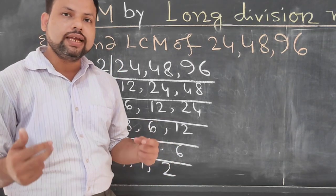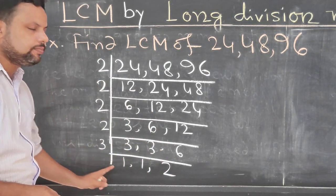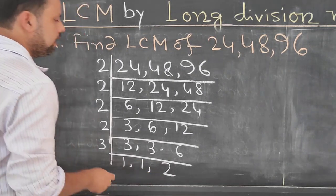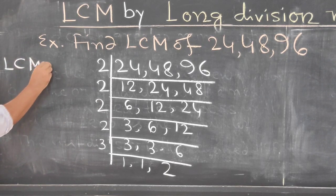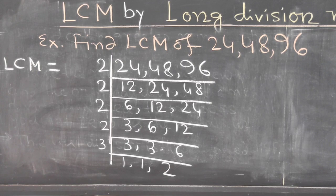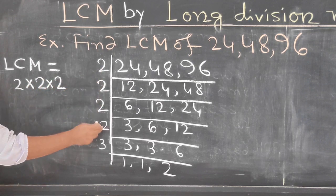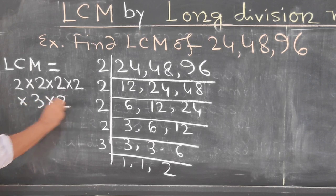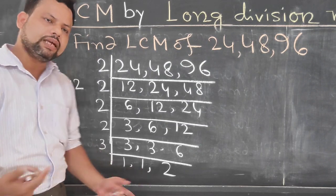Now when we have to find the LCM, we have to multiply all the divisors. So LCM equals to, I can write, LCM equals to 2 into 2 into 2, 1, 2, 3, 4, into 2, then into 3, into 2. No need to mention this one, because if we multiply it with 1, same number will be there.